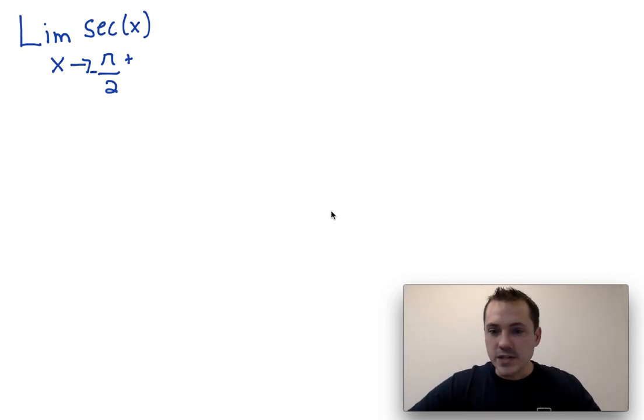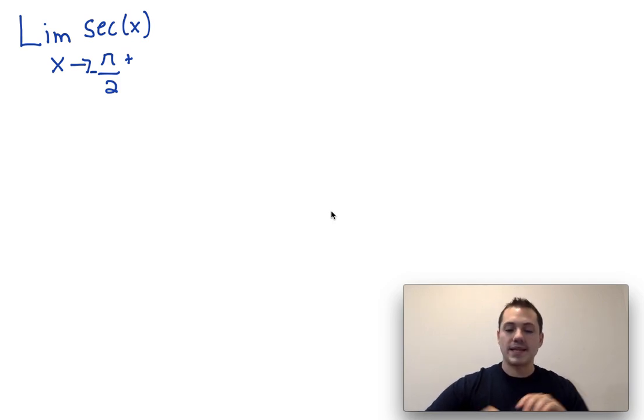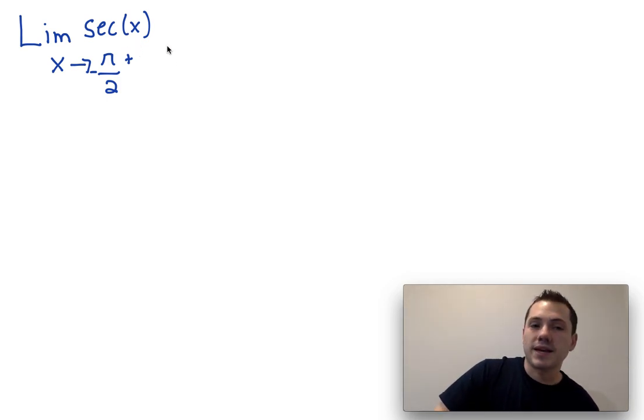When dealing with trig functions, you really want to stick to the ones that you're already familiar with. If you've taken pre-calc, you're probably very familiar with sine, cosine, and tangent, probably a little less familiar with cotangent, cosecant, and secant. The way that I'm going to choose to evaluate this is I don't want to think of this as secant, but rather I'm going to treat this as the limit as x approaches negative π over 2 from the right of 1 over cosine of x.